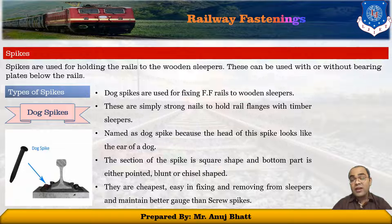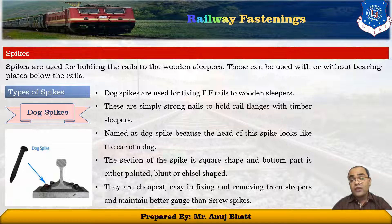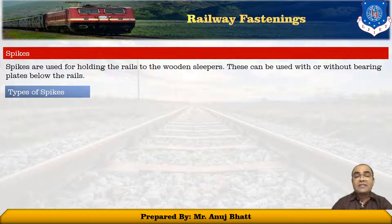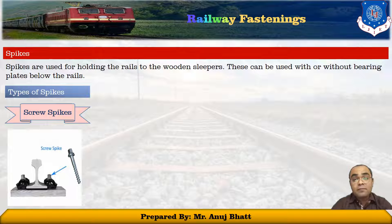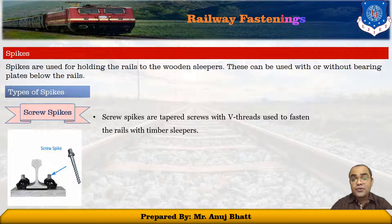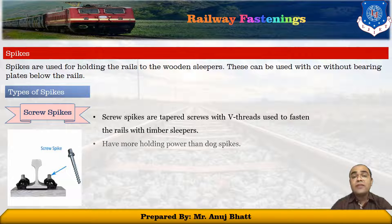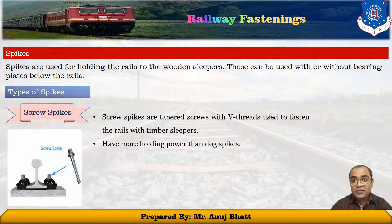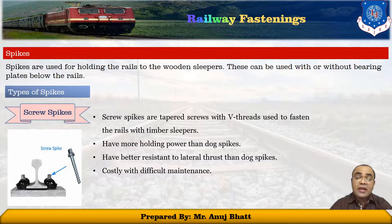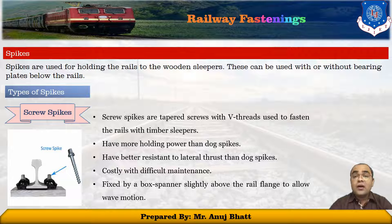For the number of dog spikes required: on straight track, two dog spikes are required; for curved track, three spikes; and at joints, bridges, or special locations, four spikes should be used to fix the rail. The next type is the screw spike. Screw spikes are tapered screws with a V-thread used to fasten rails with timber sleepers. They have more than double the holding power of dog spikes and better lateral thrust resistance. They are more costly and difficult to maintain.